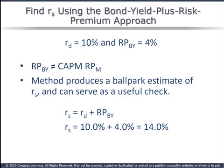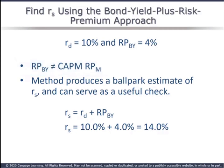Our third technique is own bond yield plus risk premium — this is not the same risk premium as used in CAPM. Ibbotson and Associates compiles data on average returns for a variety of asset classes over time periods since 1926: AAA rated bonds, AA rated bonds, large cap stock, T-bonds, etc. Assuming Coleman is a large cap firm and their bonds are AAA rated, the 4% is the difference between the average returns on those two asset classes. This gives a ballpark estimate, really useful for verification of other more robust methods.